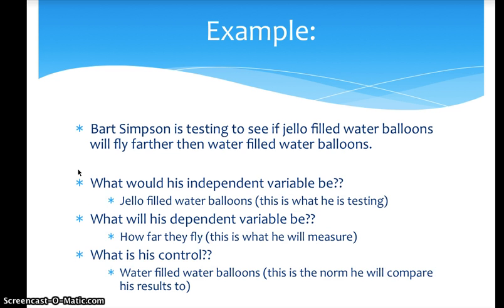Bart is testing to see if jello-filled water balloons will fly farther than water-filled water balloons. The independent variable is what he is changing or testing — the jello-filled water balloons — because he wants to see if they fly farther. The dependent variable is how far they fly, which he will measure in meters, since in science we use the metric system. His control is the water-filled water balloon — that's the norm he will compare his results to.